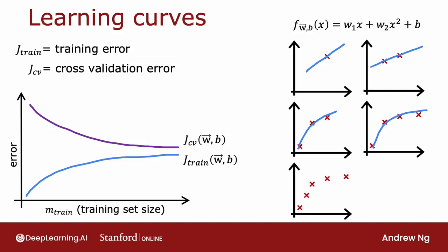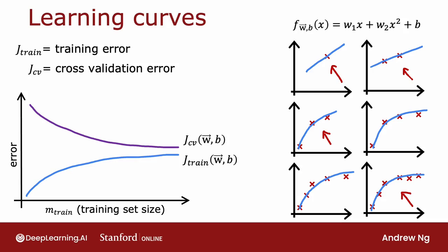With five training examples, you can fit it pretty well, but it gets even a little bit harder to fit all of them perfectly. And when you have an even larger training set, it just gets harder and harder to fit every single one of your training examples perfectly. So to recap: when you have a very small number of training examples, like one or two or even three, it's relatively easy to get zero or very small training error. But when you have a larger training set, it's harder for a quadratic function to fit all the training examples perfectly, which is why as the training set gets bigger, the training error increases.